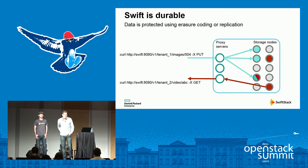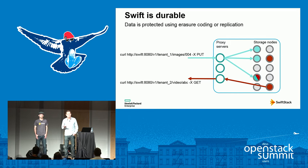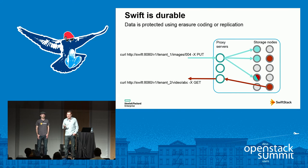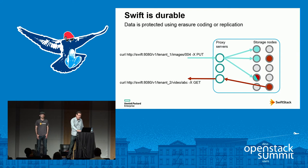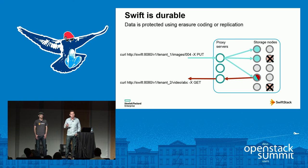As well as being scalable, Swift also offers a very durable storage service. Every object put into Swift is stored across multiple back-end storage nodes, achieved either using erasure coding or a simple replication strategy. Typically Swift stores three copies of the object, each on a different storage node. This means your data is very durable and highly available. Swift is able to continue to serve read requests even in the face of disk failures, storage node failures, or network failure.